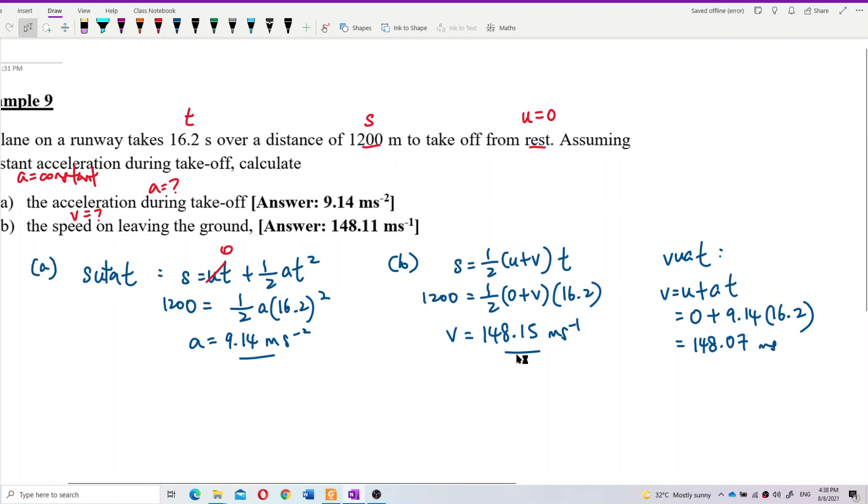So that's the answer. You have many ways to do the questions. So the answer is correct. Don't forget the unit. You must have the unit. Acceleration is meter per second square. The velocity is meter per second.